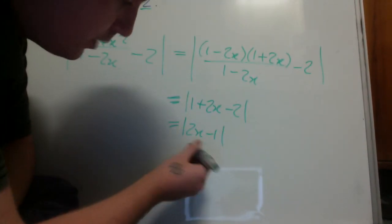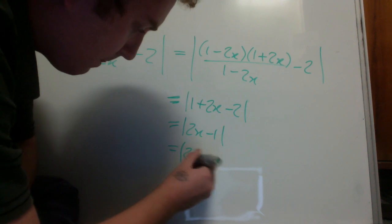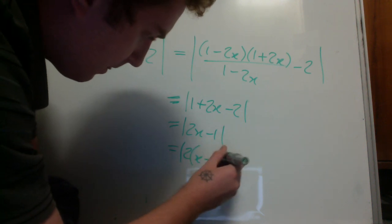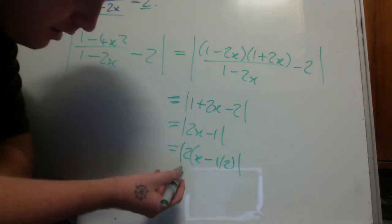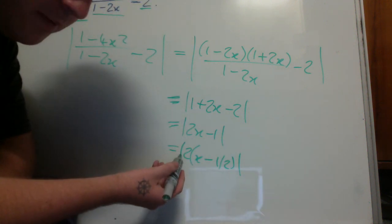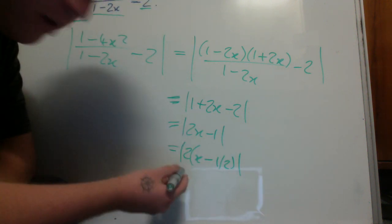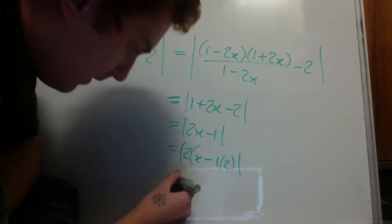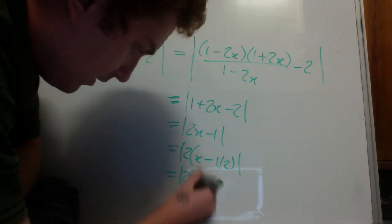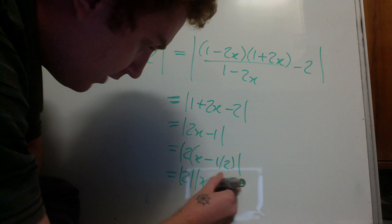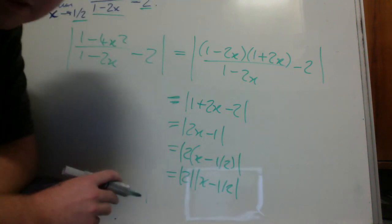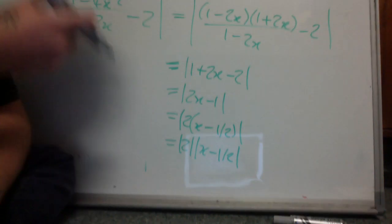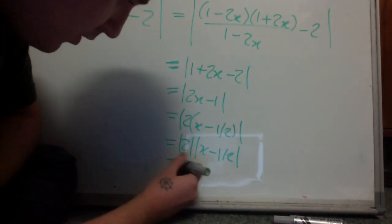Let's factor the 2 out. The absolute value of a product is the product of the absolute values, so |2| times |x - 1/2|. The absolute value of 2 is just 2.